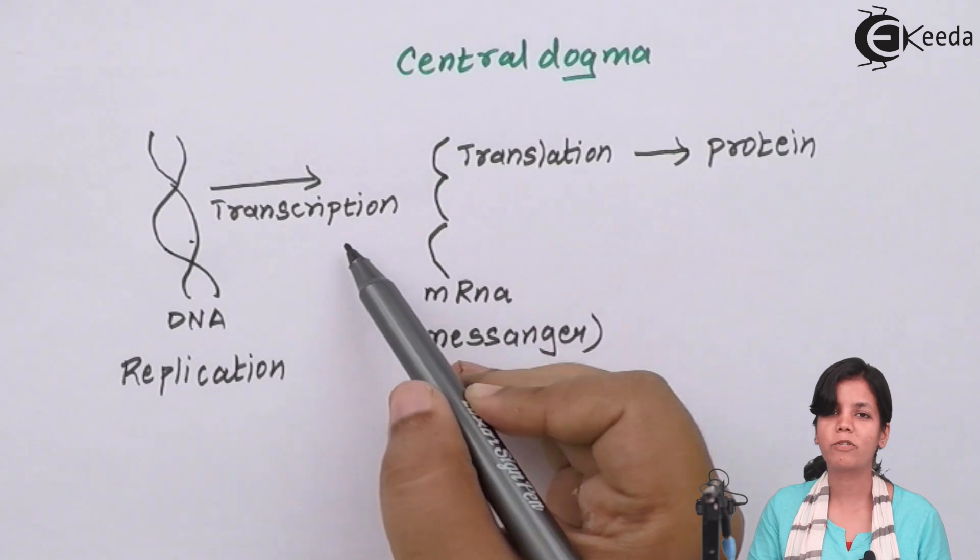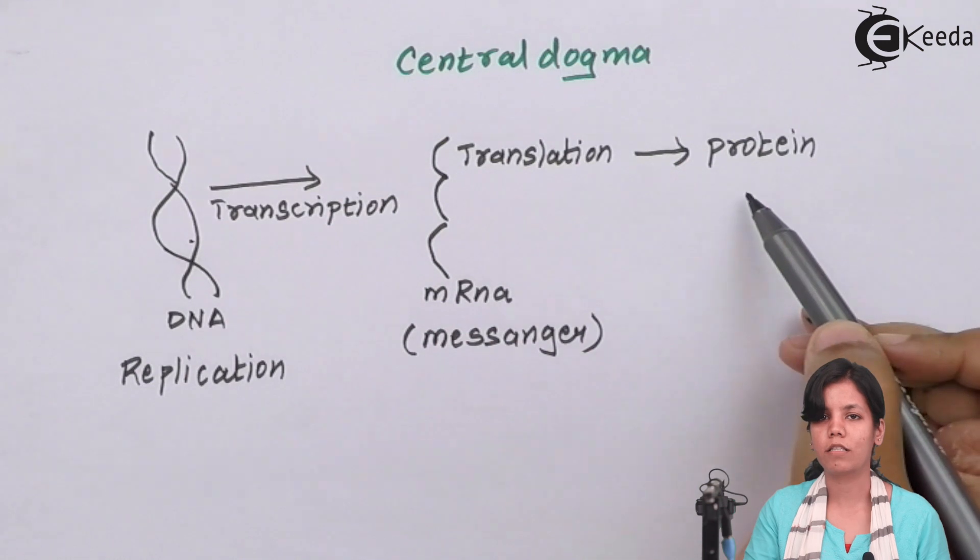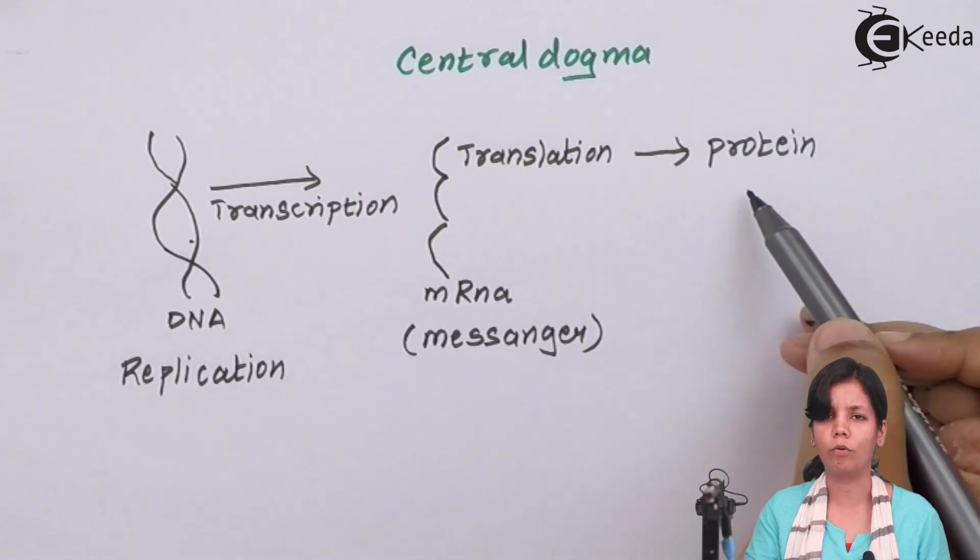Now once transcription is done what happens is mRNA is converted into proteins and these proteins could be all your hormones, enzymes, for example adrenaline, noradrenaline, insulin, all of them.